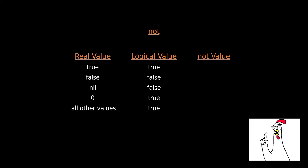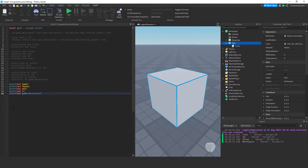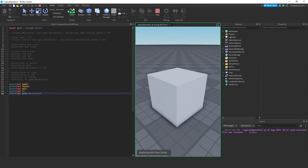Another operator we have is NOT. NOT is a unary operator. It reverses the logical state of its operand. Not true will be false. Not false will be true. Not nil will be true, because nil's logical value is false. Not zero will be false, because zero's logical value is true. Not any other value will also be false. I have five print statements: not true, not false, not nil, not zero, and not game.workspace. Running them gives: false, true, true, false, and false — exactly as expected.